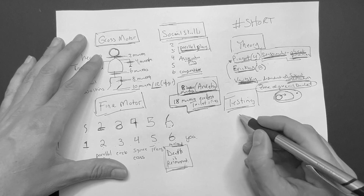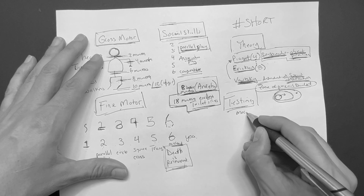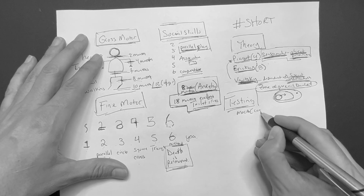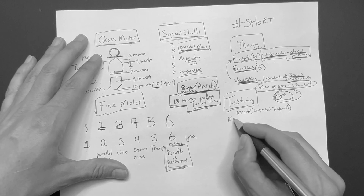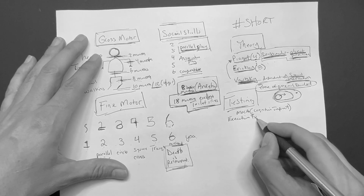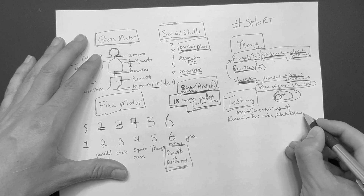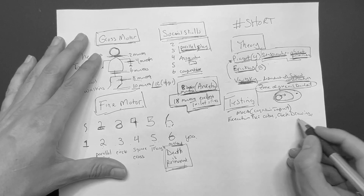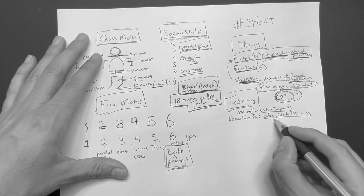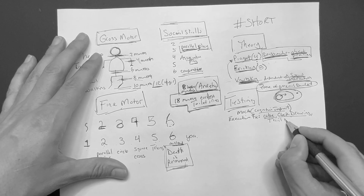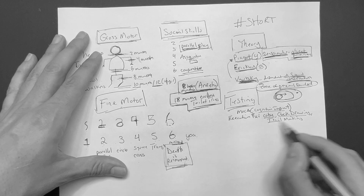When it comes to testing, there's a thing called the MOCA — a screening tool for cognitive impairment. Within the MOCA, they test executive functioning using a cube test, a clock drawing test, and trail making. Trail making is when you tell somebody to go from A to 1, B to 2, C to 3, and so on — that tests their executive function.